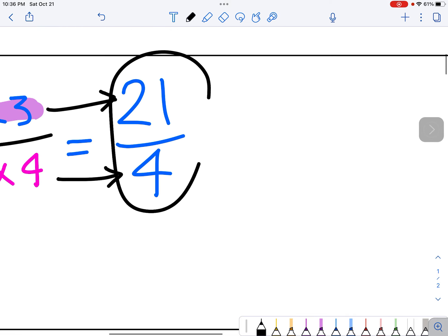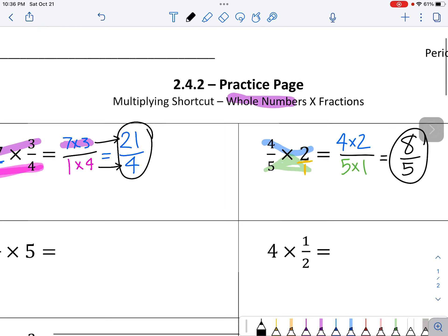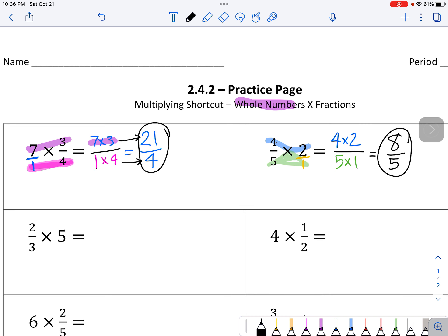Going back to the first one, 21 fourths. Again, if you want to change these answers into mixed numbers, you're welcome to, but you don't have to. We will be practicing that very soon.